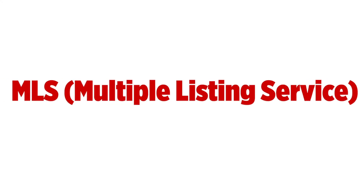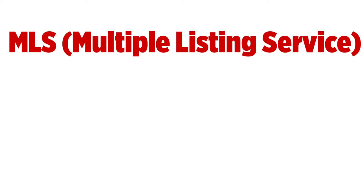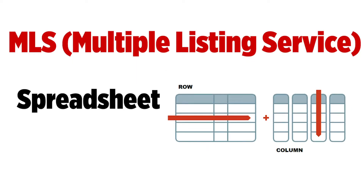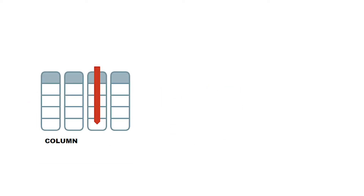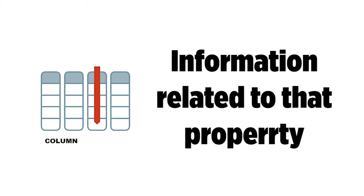And yes, you absolutely heard me correctly. The MLS is no more than a glorified Microsoft Excel sheet or a Google sheet. Think of it this way: the Multiple Listing Service is no more than a spreadsheet with a bunch of columns and rows. Each row is essentially a property and each column is information related to that property.